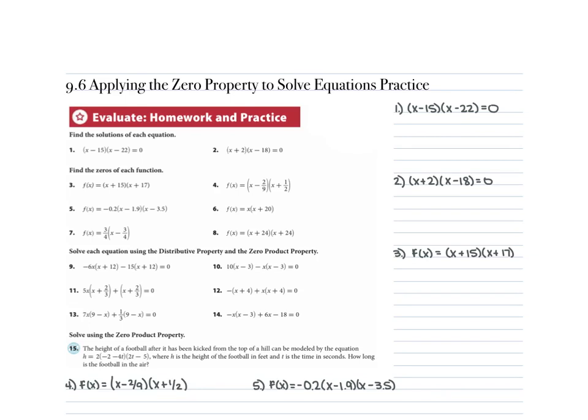Applying the zero product property to solve equations — practice solutions. For these equations, we're going to be dealing with them that are mostly factored. If they are factored for us, we just have to set each part equal to 0 and solve for the variable. If they are not factored for us, we need to factor, then do the same.